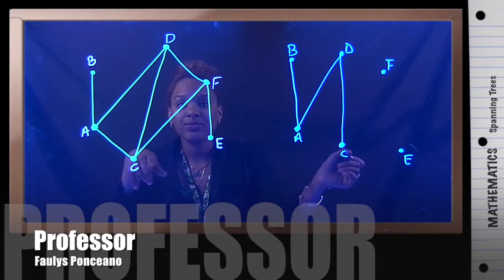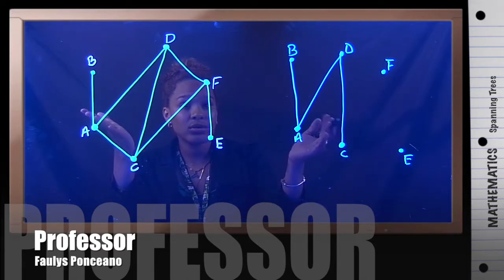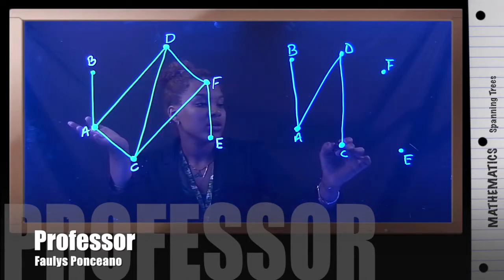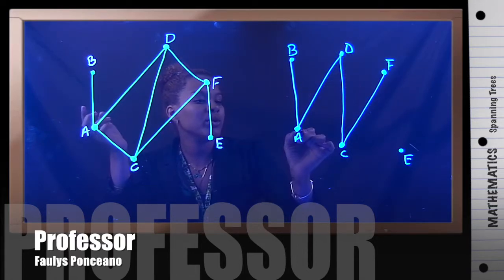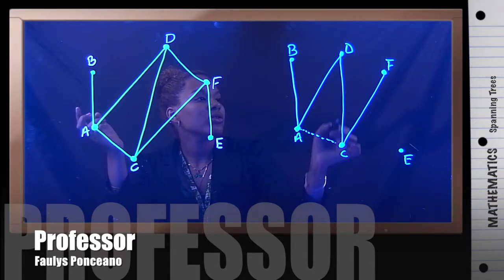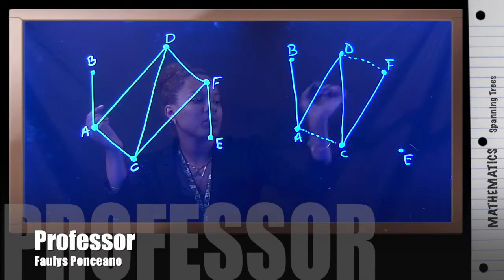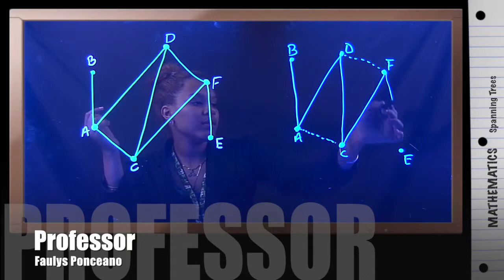From C, the only option to go is to go to F. Therefore, that means that I have gotten rid of from D to F. The edge right here is gone. So I'm going to put it dotted so you know what I'm taking away. And my last step is this right here.